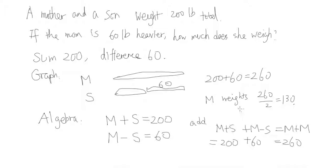So twice the mom's weight equals 260. This means the mom weighs 130, which is half of 260.